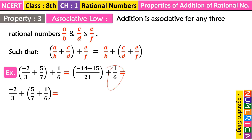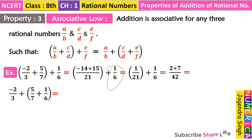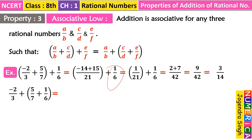We get 1/21. Plus 1/6 remains the same. Then we calculate further. After taking LCM we get 42, and in the numerator 2 + 7 = 9. So we get 9/42. We can simplify by dividing both numbers by 3, converting to 3/14. So the result of the first grouping is 3/14.